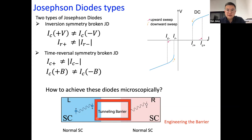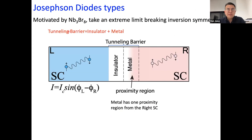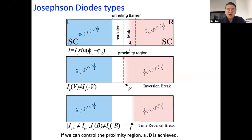The idea is to engineer the tunnel barrier. Motivated by the NbBr3.8 materials and the Josephson effect, we take a limiting case of the inversion-symmetry-breaking Josephson junction where the tunnel barrier consists of an insulating layer and a metallic layer. Due to the metallic nature, the superconductor on the right-hand side will have a proximity region extending into the metallic region. If a voltage or current can control the thickness of this proximity region, we can modulate the effective thickness of the Josephson barrier, thereby achieving Josephson diode behavior.